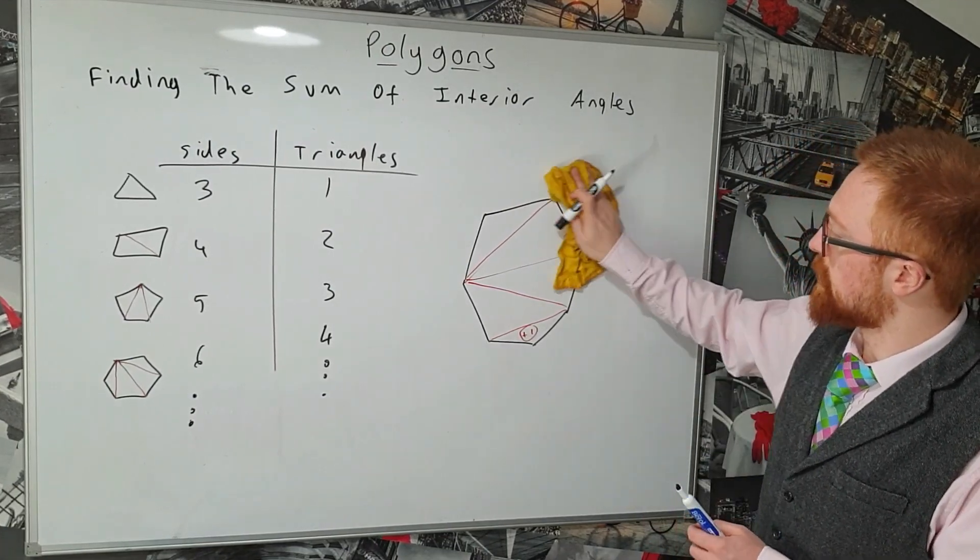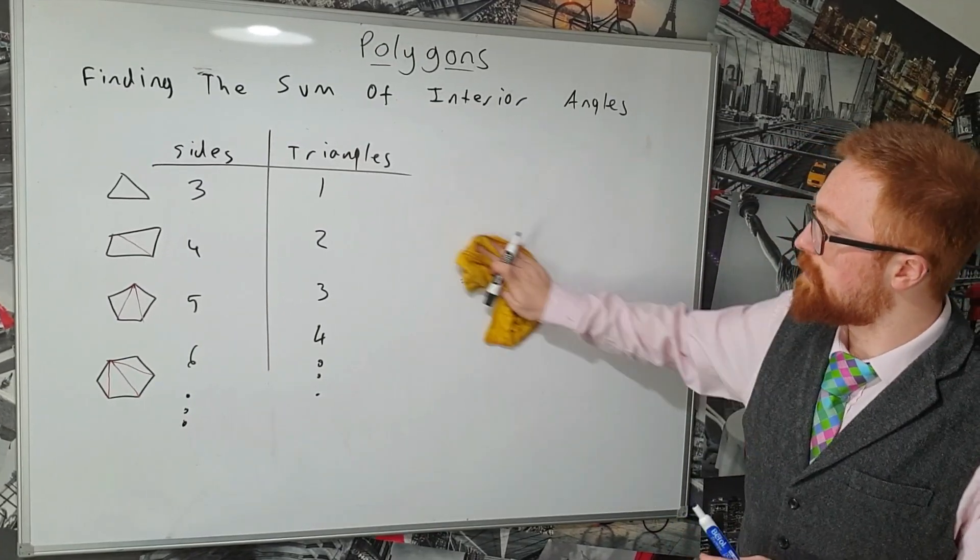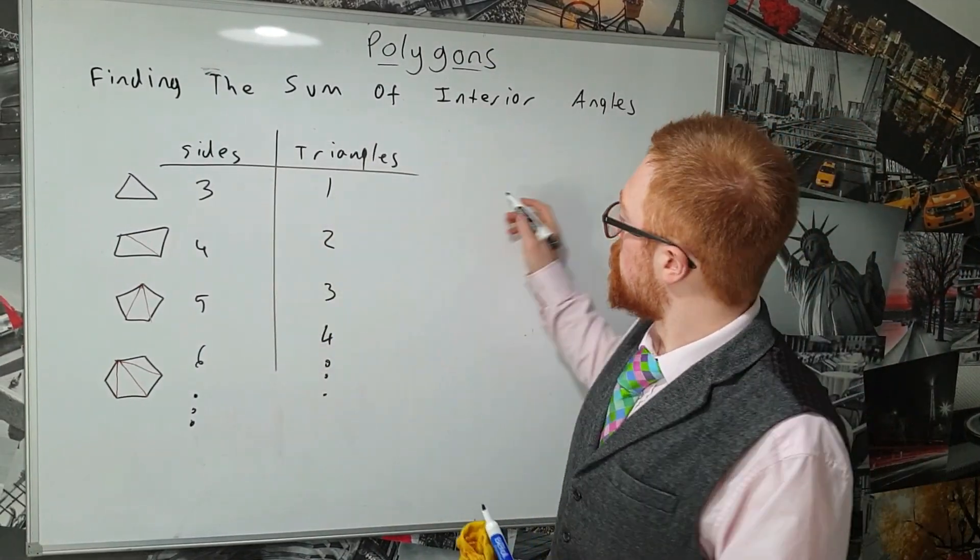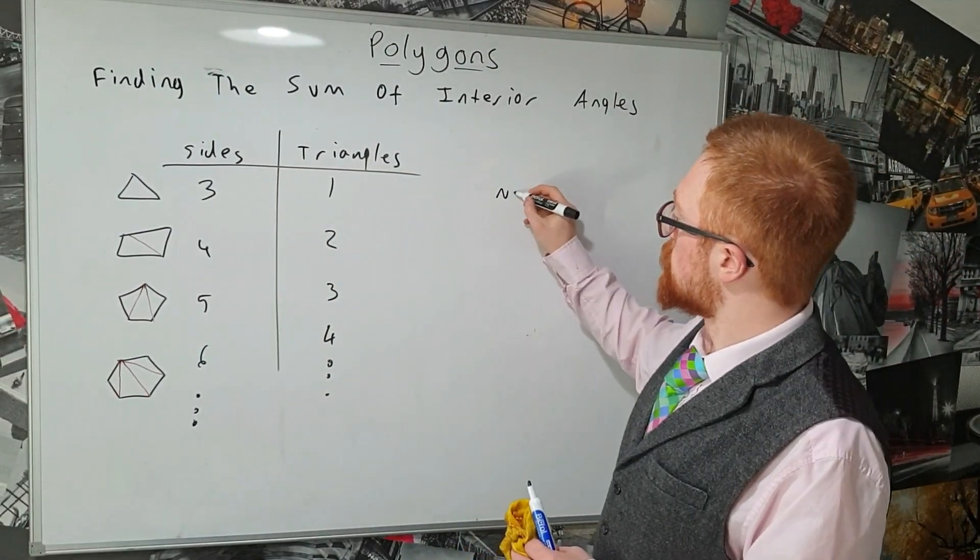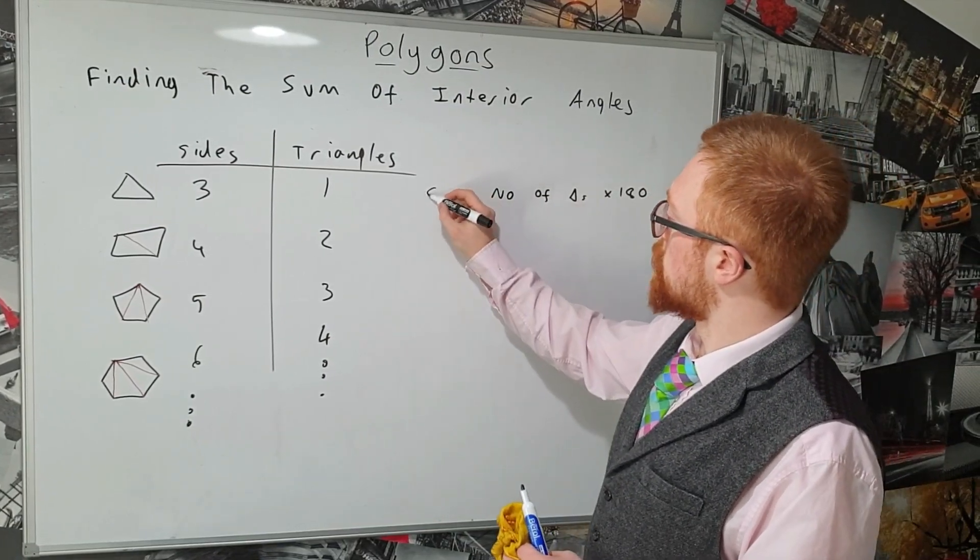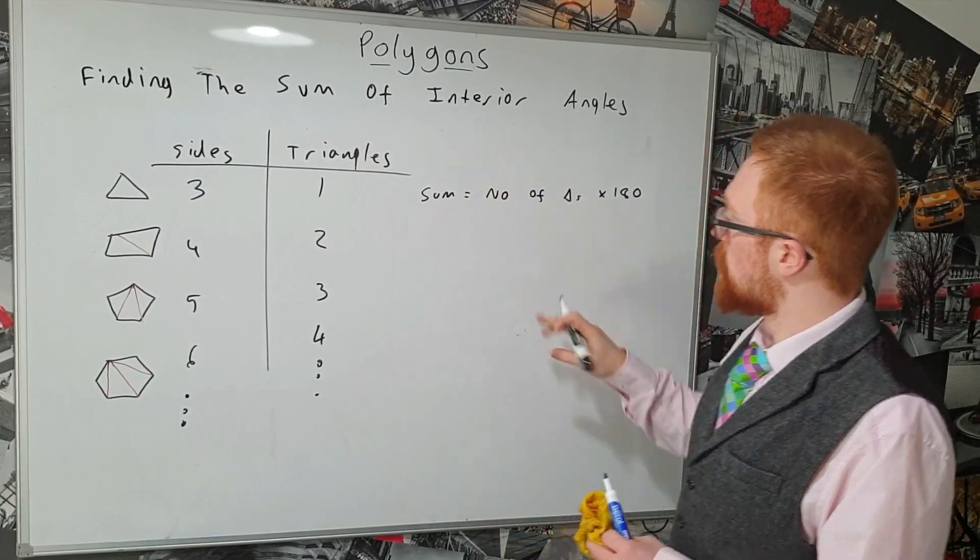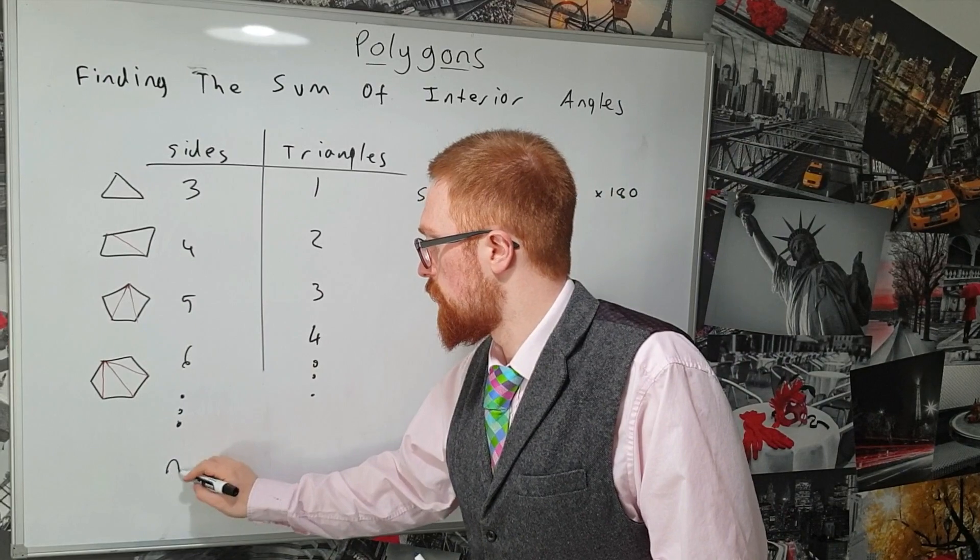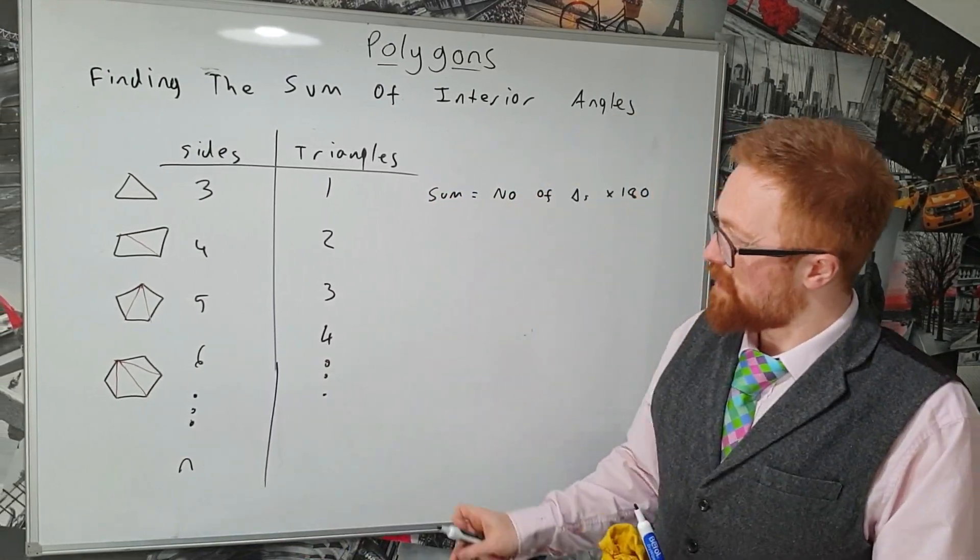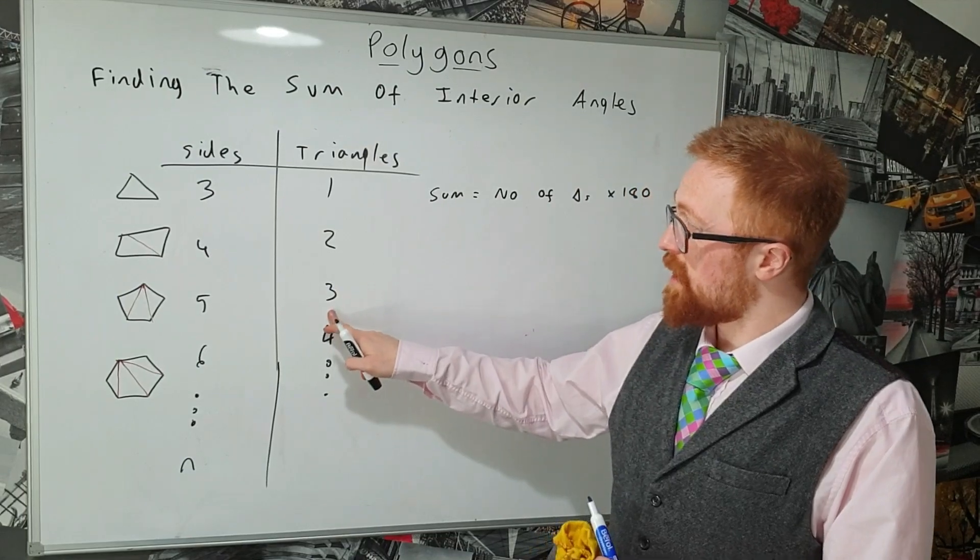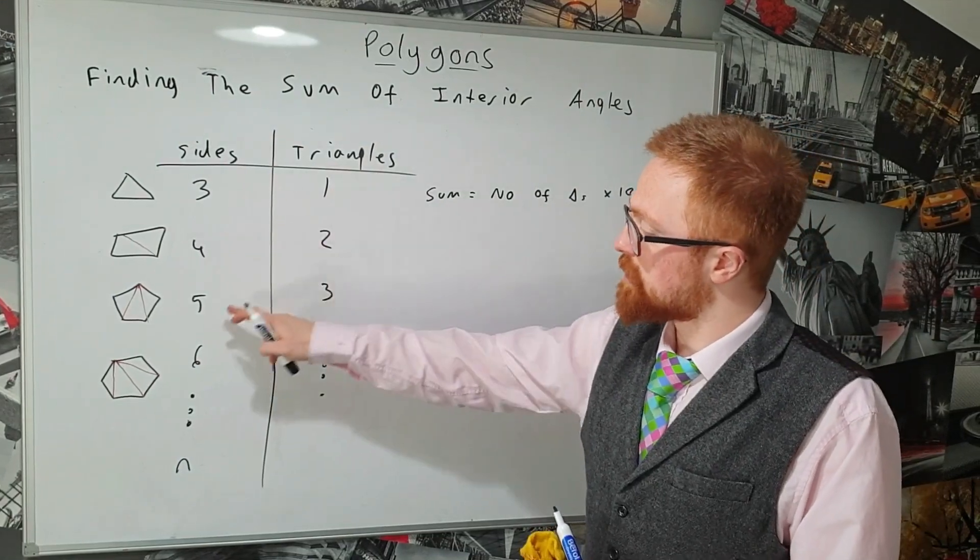Okay, so what this allows us to do is, remember once we figure out the number of triangles, we just times that by 180 degrees and that gives us our sum of the interior angles. Now the number of triangles, if we call the number of sides of our polygon n, well how do I get from three to one and four to two and five to three? Well each time I'm subtracting two.